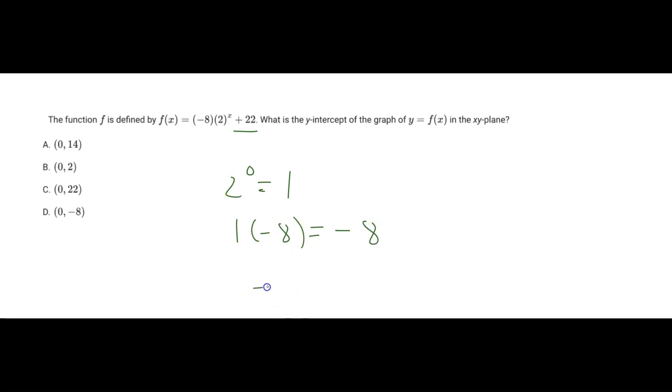So in reality, we have negative 8 plus 22, and negative 8 plus 22 is going to give us 14. So 14 here is going to be our y output when x is 0, and therefore our answer choice is going to be A.